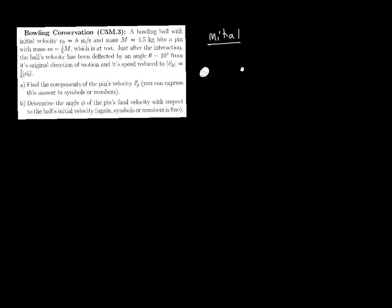Let's get a picture of the initial and final state here. Initially we have a bowling ball moving towards a pin which is at rest. I'm going to use big M for the bowling ball with velocity V0. Little m is going to be the pin, which is one sixth of big M. In the final state, the ball's velocity has been deflected by 10 degrees from its original direction of motion.